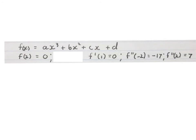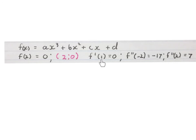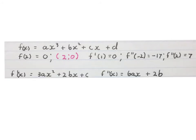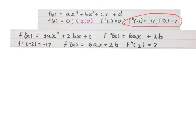The last problem requires finding the equation of a cubic function. They gave us: f(2) = 0, meaning a coordinate (2, 0) is on the graph; f'(1) = 0, meaning x = 1 is an x-value of a turning point; the second derivative when x = -2 gives -17; and the second derivative when x = 2 gives 7. To answer this, we need the original function, the first derivative, and the second derivative.